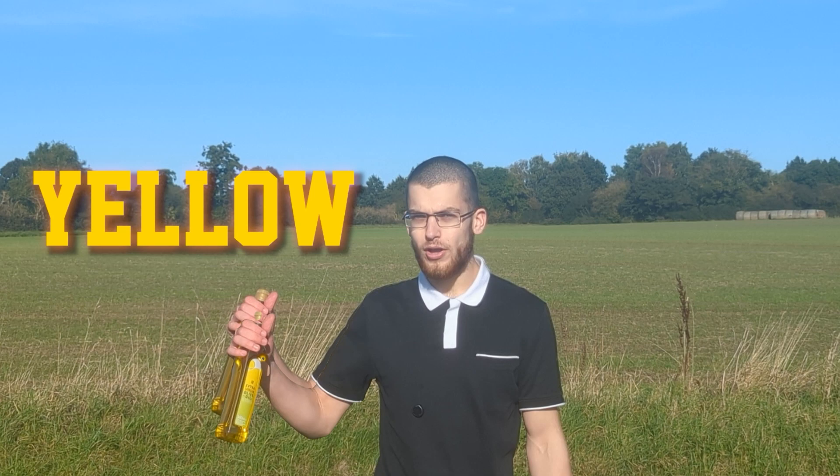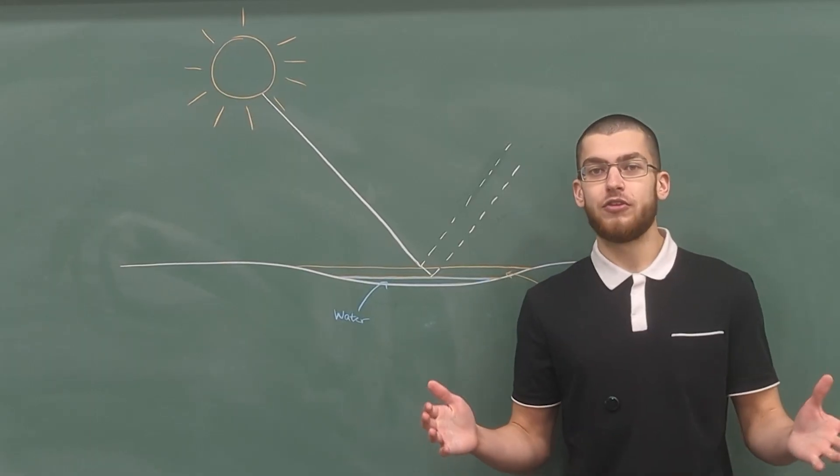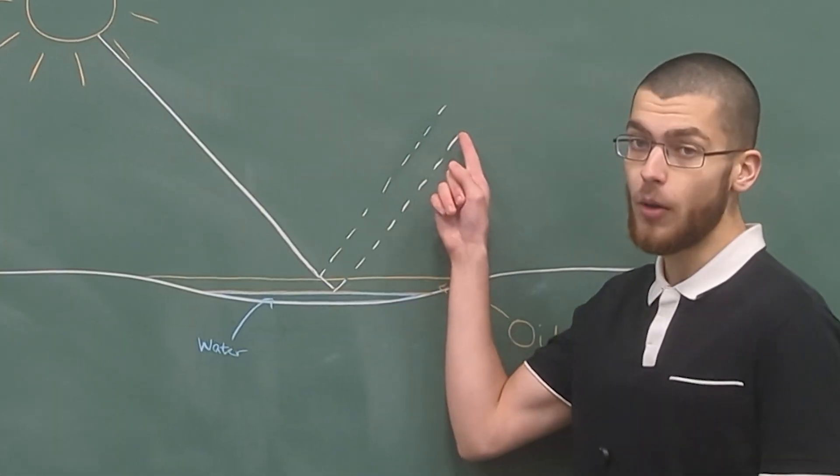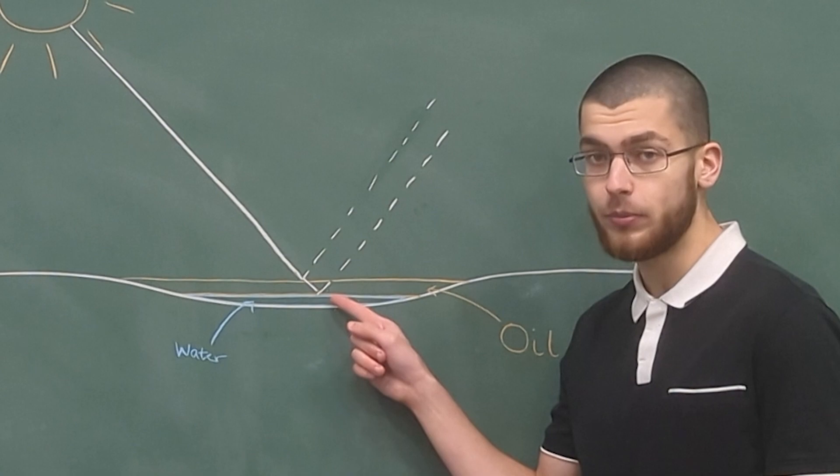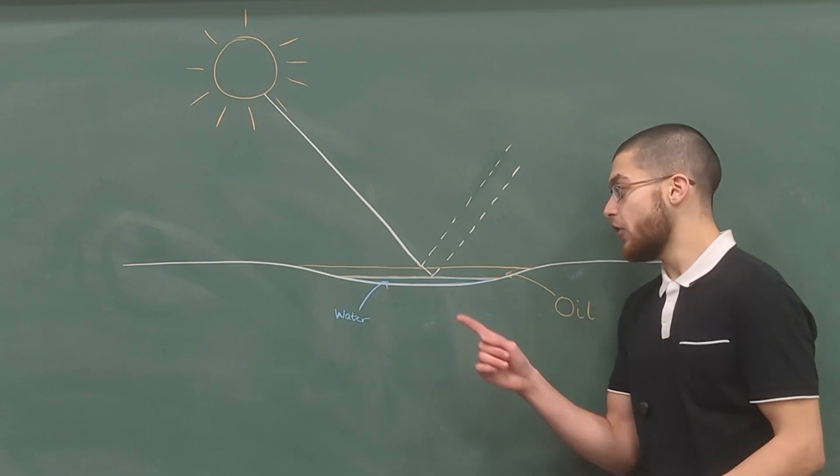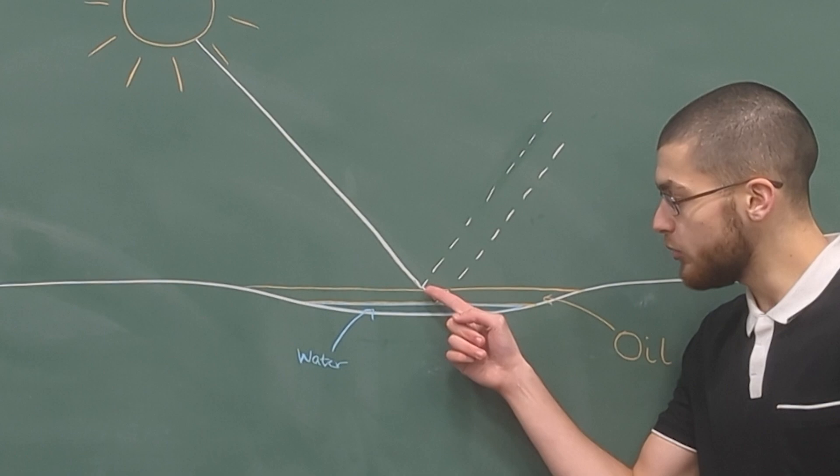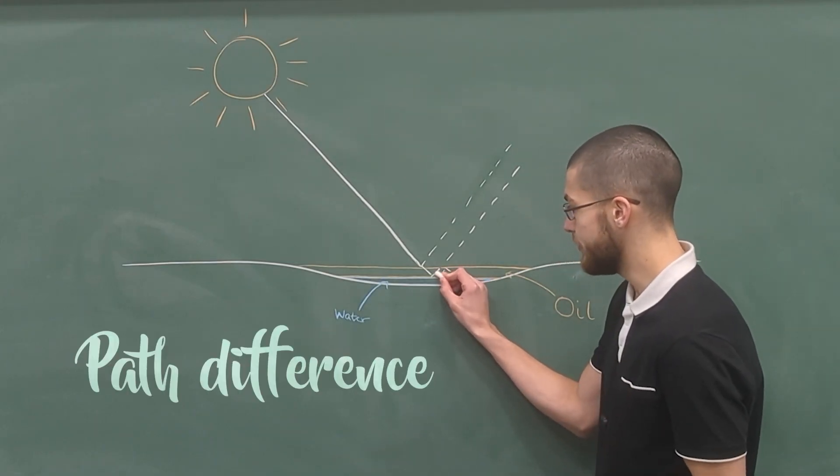So how is the puddle a rainbow if oil is yellow and water is clear? When the sun shines on this puddle of oil and water, some of the light reflects directly off the top layer of oil and some reflects off the bottom layer of oil where the oil meets the water. Now, the light which reflects off the bottom layer of oil travels slightly further than the light which travels directly off the top layer of oil. This difference here is called the path difference.